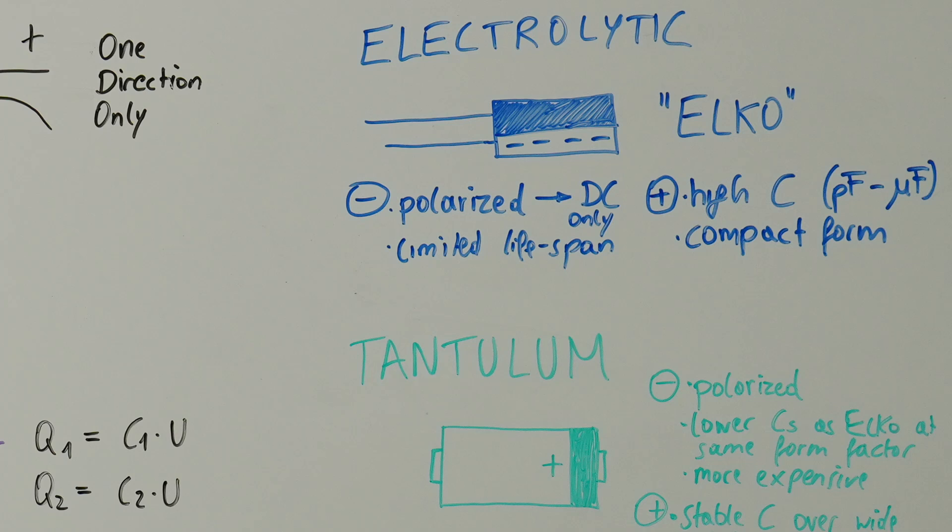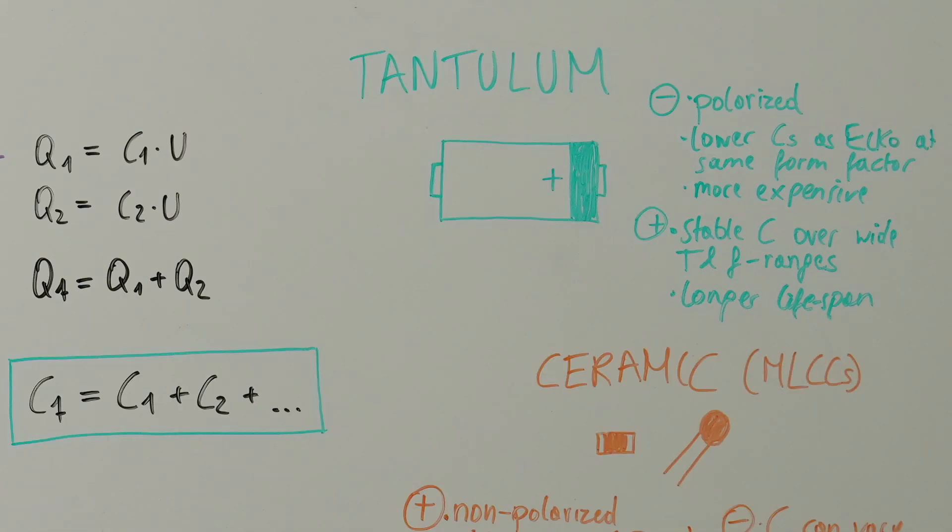Finally, there are many different capacitor types. The aluminum electrolytic capacitors feature high capacitances, are cheap, polar, and have a limited lifespan. The tantalum capacitors have slightly lower capacitances at the same volume but are very stable in temperature and voltage changes. However, they are more expensive and sensitive to voltage spikes and still polarized.